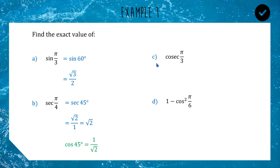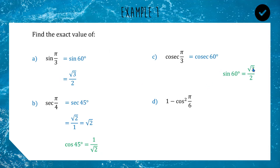For question c, cosec(π/3): π/3 is 60 degrees, so we're finding cosec 60. The third letter is s, so cosec is sine flipped upside down. Sine 60 is √3/2, so cosec 60 is 2/√3. Reminder: if you just put these into a calculator and write a decimal, you won't get the marks.